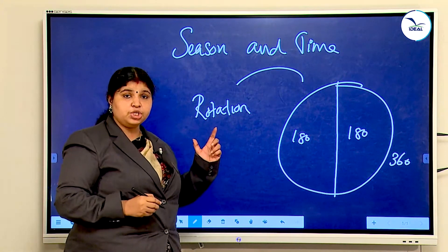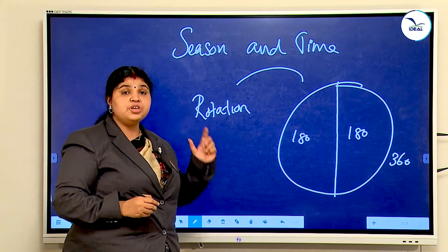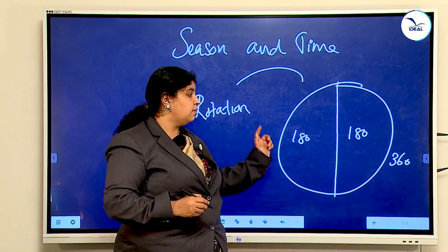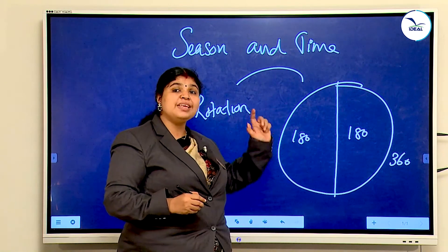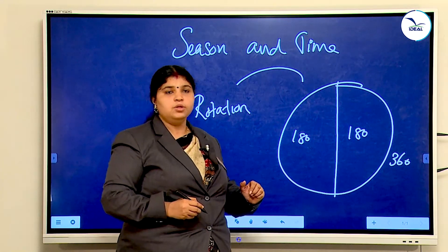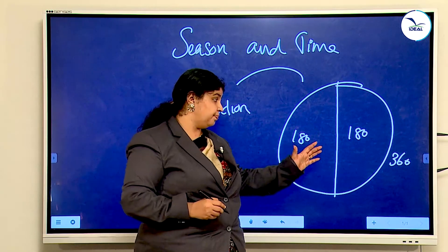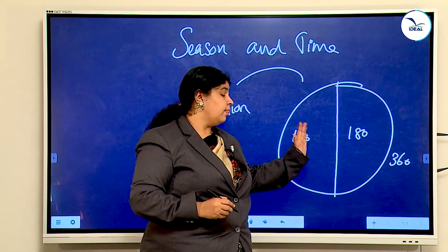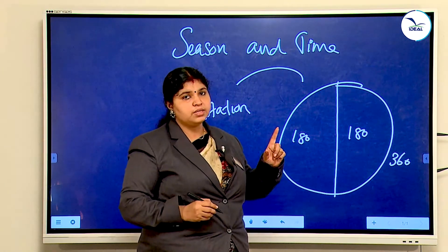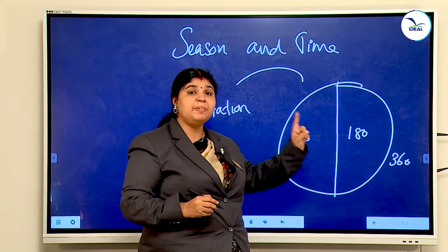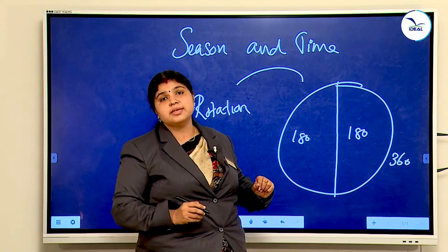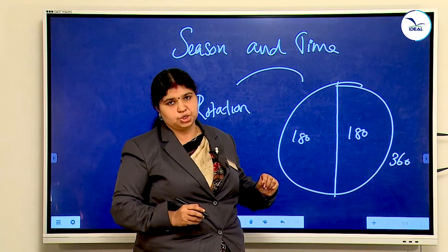In one rotation of 24 hours, the earth completes these 360 longitudes. One day is 24 hours. In 24 hours, the earth completes the whole 360 longitudes.